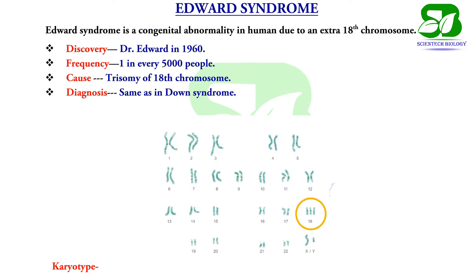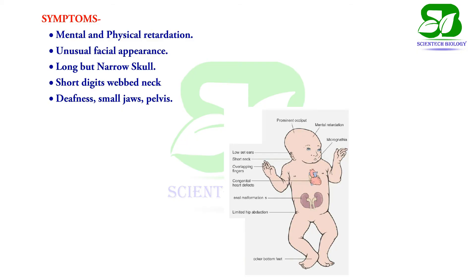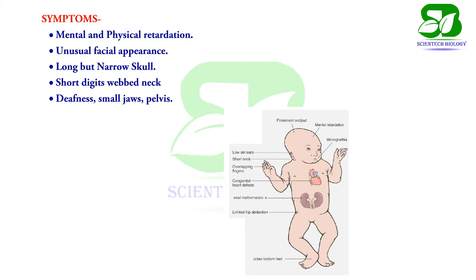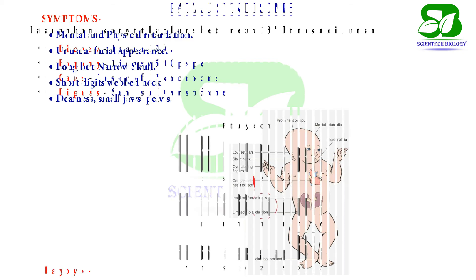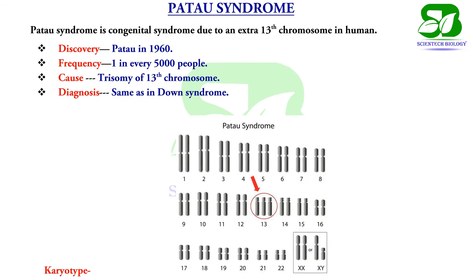Edward syndrome is an autosomal abnormality due to an extra 18th chromosome. Dr. Edward in 1960 first reported this disorder. One in every 5,000 children has this disorder. The symptoms include mental and physical retardation, unusual facial appearance, and an unusually shaped skull — long but narrow.